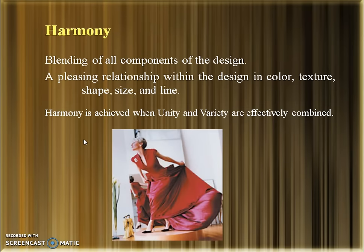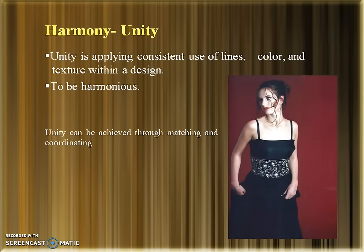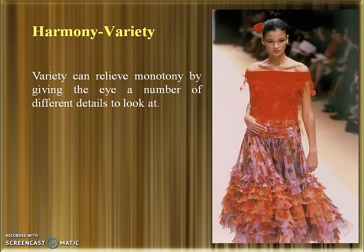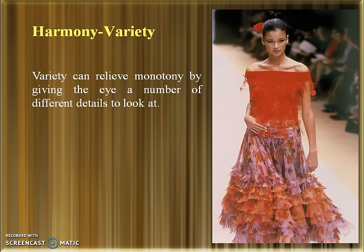Next is Harmony — the blending of all components of the design. It is a pleasing relationship within the design in color, texture, size and line. Harmony is achieved when unity and variety are effectively combined. Unity is the consistent use of lines, color and texture within a design, achievable through matching and coordination. For example, unity can be achieved through the use of black color. Variety can relieve monotony by giving the eye a number of different details to look at, such as details in the top and ruffles in the skirt.